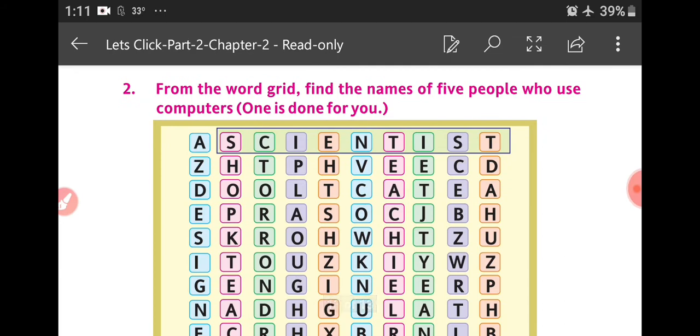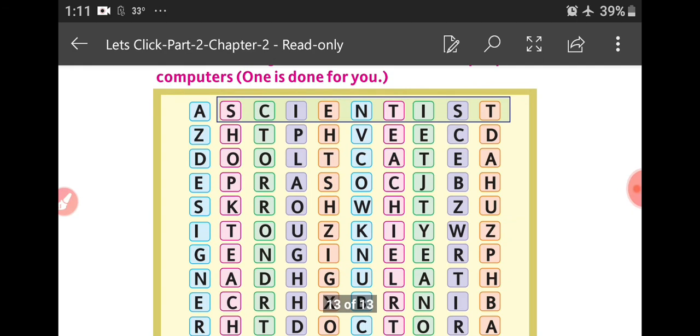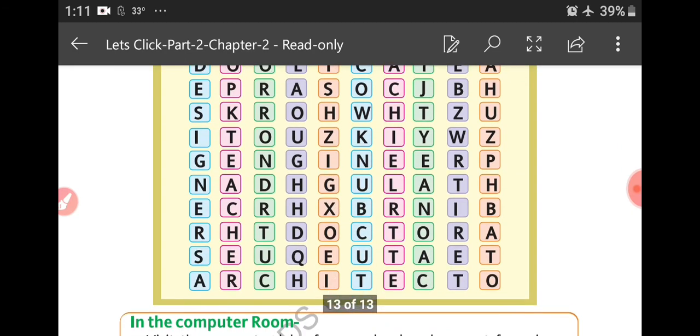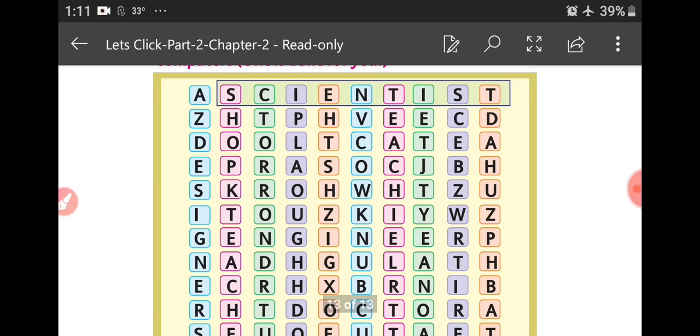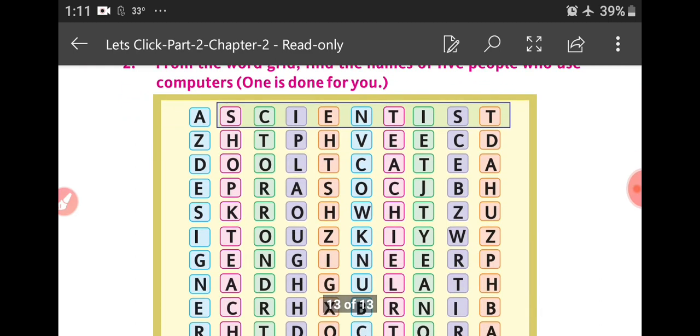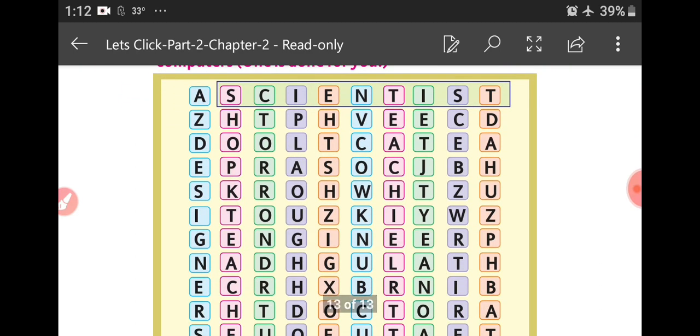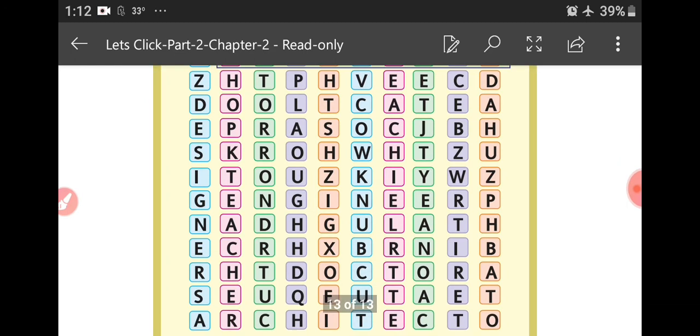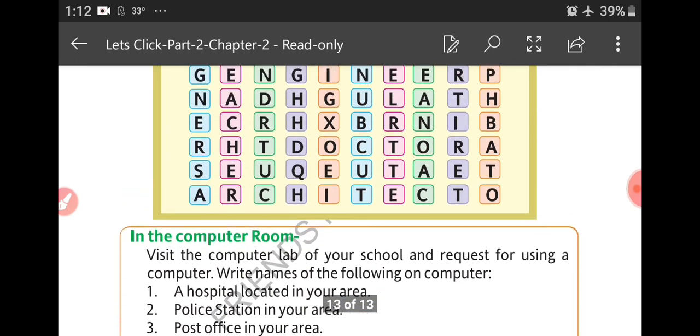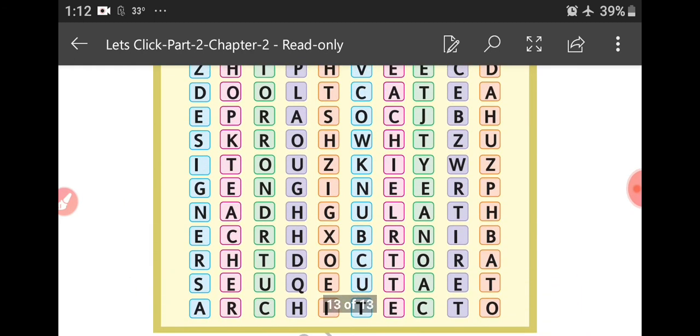Two: from the word grid, find the names of five people who use computers. One done for you means one answer is, see this box: scientist, like this five names, four names you can search from this box, okay, like doctors, shopkeepers, like this. Okay, search it. This is your homework.